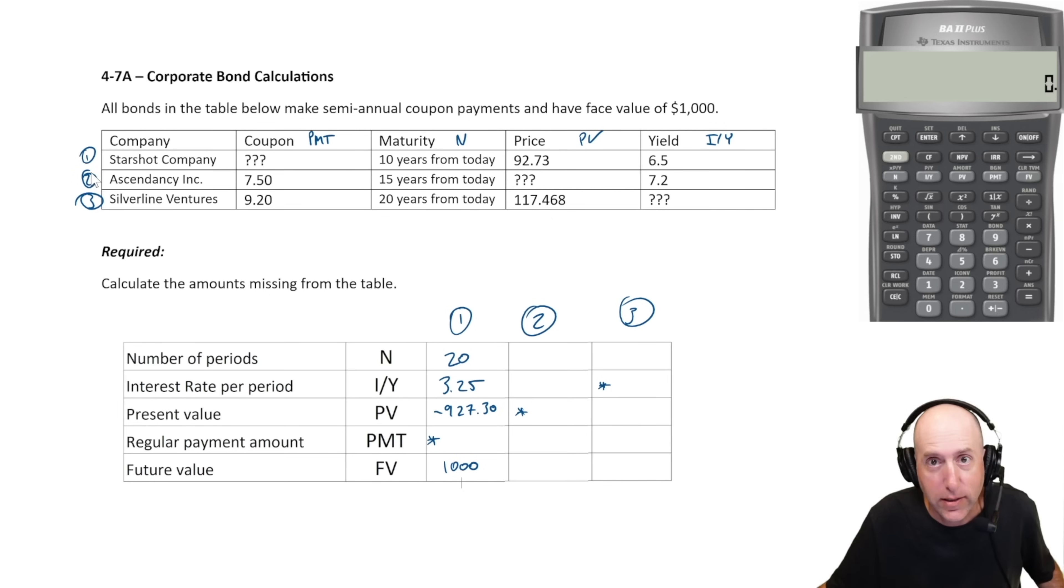20 goes in as our N, 3.25 goes in as our I/Y, negative $927.30 goes in as our PV. PMT we don't know, $1000 goes in as our FV.